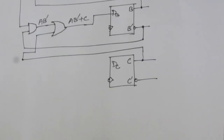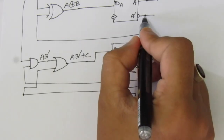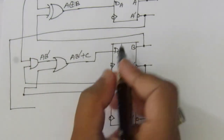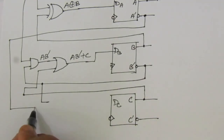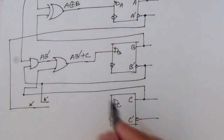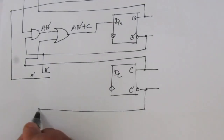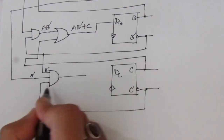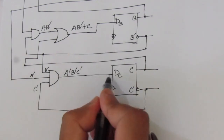For DC = Ā·B̄·C̄: take a connection from Ā (A complement), B̄ (B complement), and C̄ (C complement). Make them inputs of an AND gate, since we have a multiplication operation. The output Ā·B̄·C̄ will be connected to the DC input.